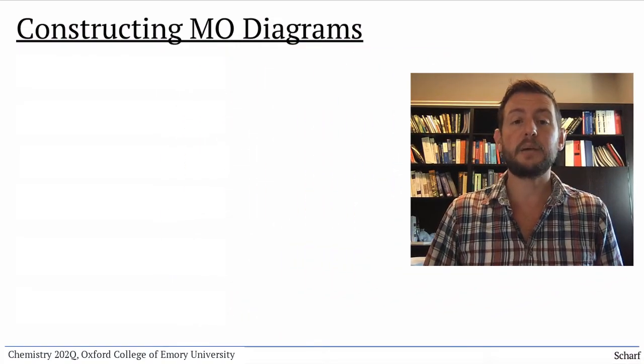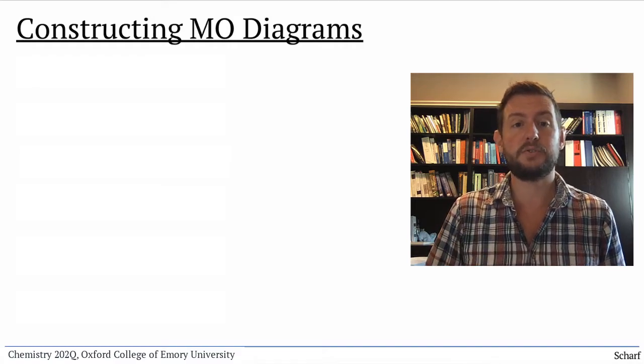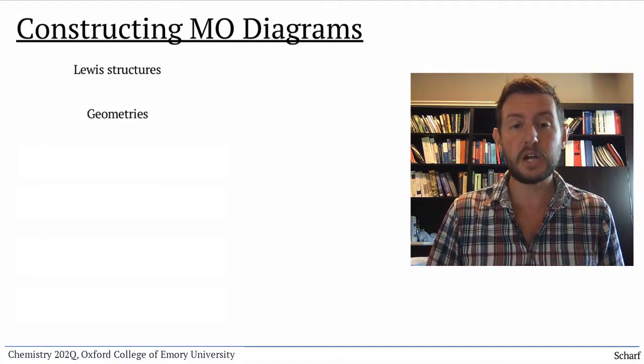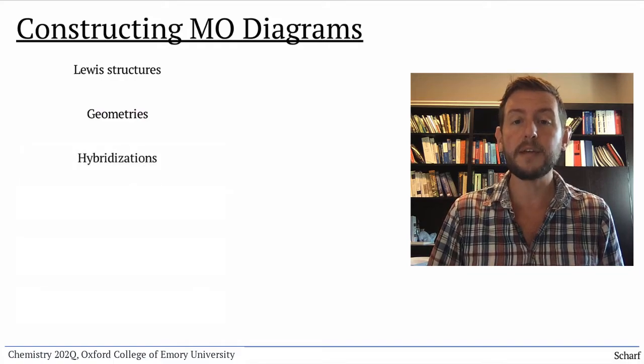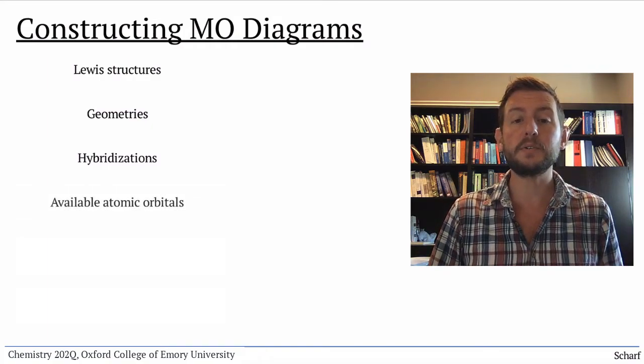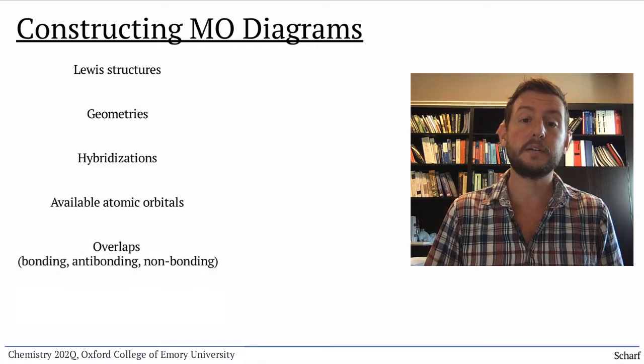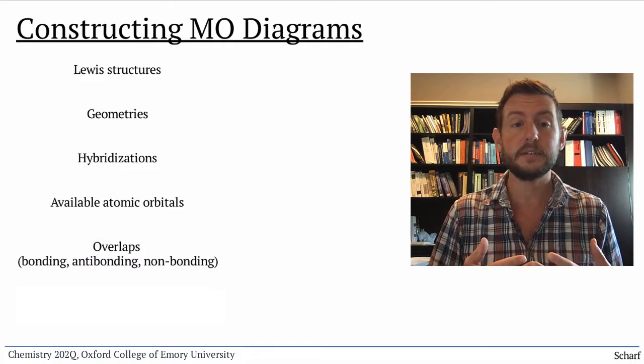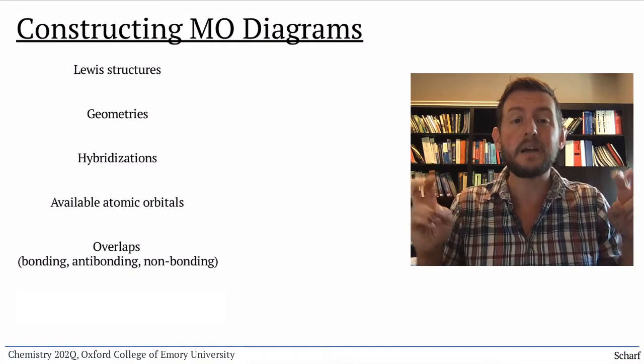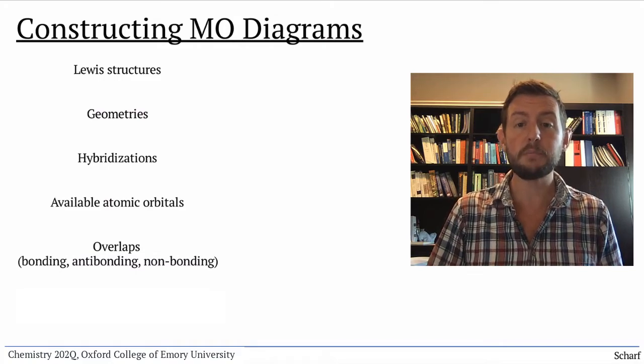In order to construct MO diagrams for polyatomic molecules, we start from Lewis structures. From there, we determine geometries. And then, based on the geometries, we assign hybridizations to every atom except hydrogen. The hybridizations let us know what atomic orbitals each atom brings to the table. Then, we see how the atomic orbitals overlap with one another to make bonding and antibonding orbitals. We may also encounter orbitals that don't overlap with others. These end up as non-bonding orbitals. Finally, we fill up the molecular orbitals with the total number of valence electrons available.